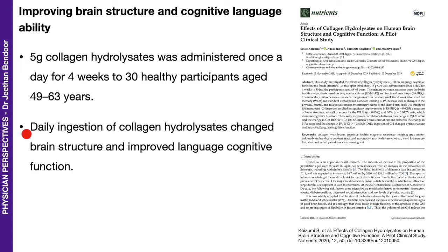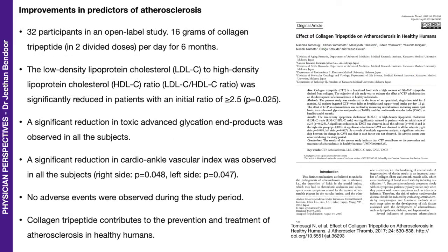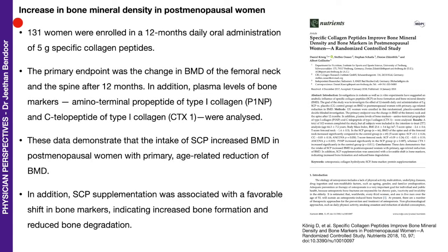That brain study reported that daily ingestion of collagen changed brain structure and improved language cognitive function. Another study on improvements in predictors of atherosclerosis used 16 grams of collagen in two divided doses for 6 months, reporting that collagen tripeptide contributes to the prevention and treatment of atherosclerosis in healthy humans. A further study on increasing bone mineral density in postmenopausal women used 5 grams of collagen peptides for 12 months, with improved bone markers reported.